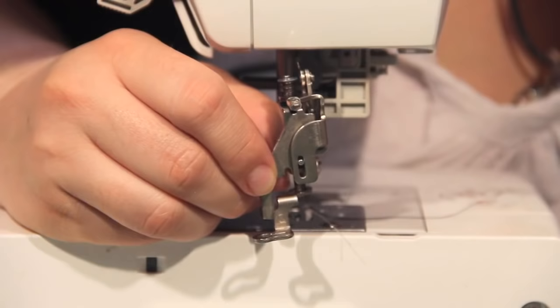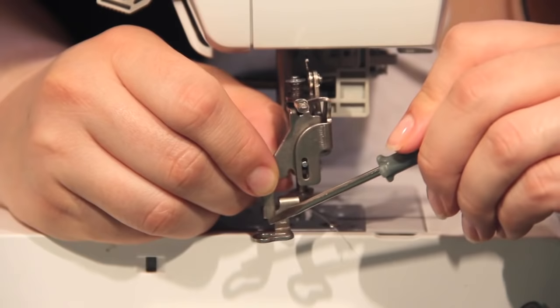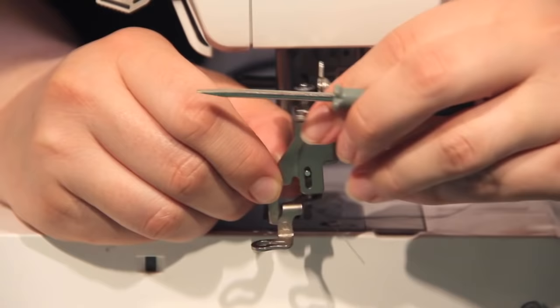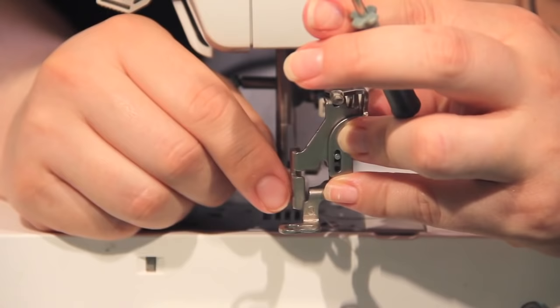So here's your embroidery foot. This, what you're looking at right now, is the front of the foot. You can tell because we see this little hole right here. That's where your needle goes through. This big arm right here that kind of sticks out, this goes right above your needle holder. Over here, this cutaway is where your shank screw goes. So this is the front, and all the way back here is the back.